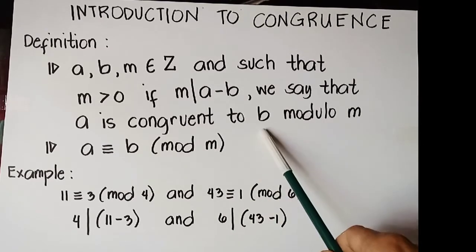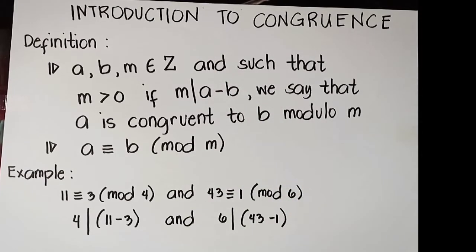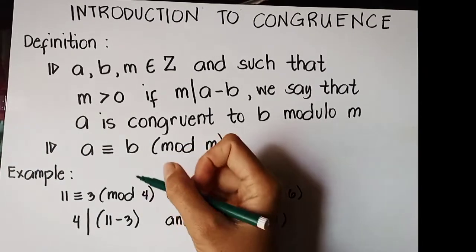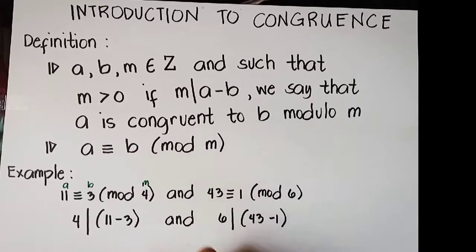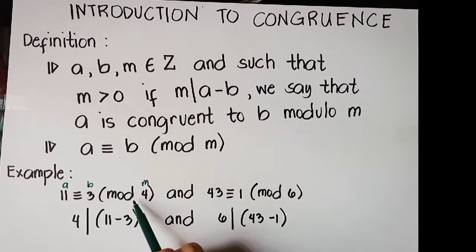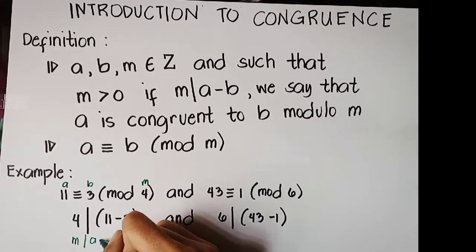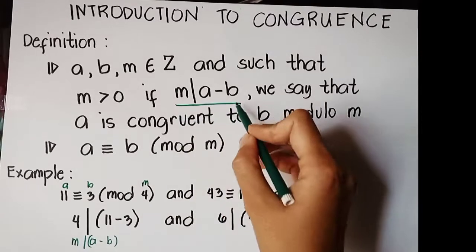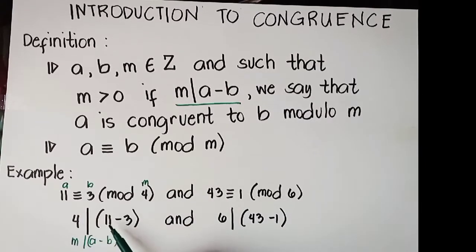So from the definition of congruences, if a, b, m are elements of integer numbers such that m is greater than 0, if m divides a minus b, then we can say that a is congruent to b modulo m. In this case, m here is 4, b is 3, and a is 11. We have m divides a minus b, so m as 4 divides 11 minus 3.